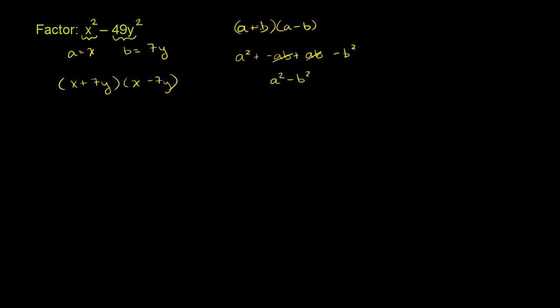we're just pattern matching based on this realization right here. If I take a plus b times a minus b, I get a difference of squares. This is a difference of squares, so when I factored, it must come out to the result of something that looks like a plus b times a minus b, or x plus 7y times x minus 7y.